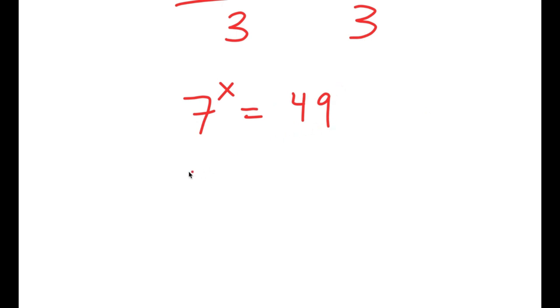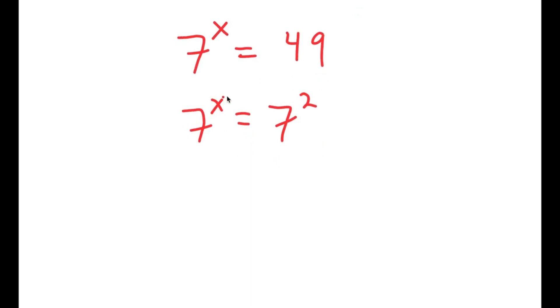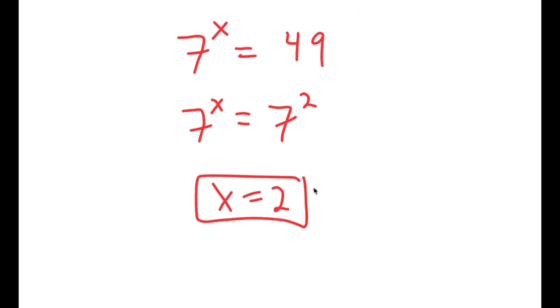And 49 is equal to 7 squared. So I have 7 to the power of x is equal to 7 to the power of 2, meaning x is equal to 2.